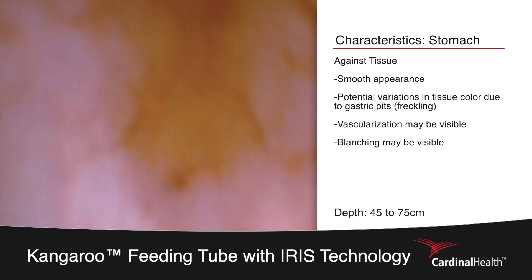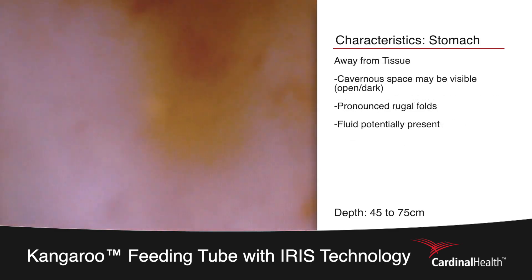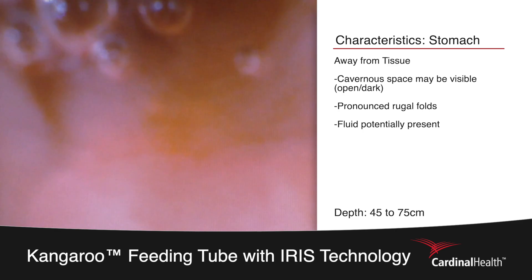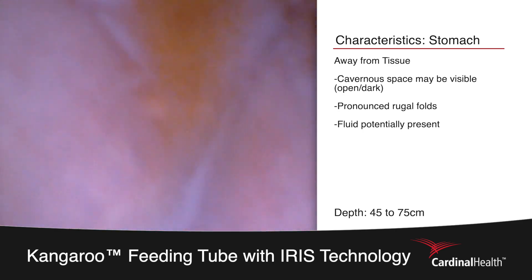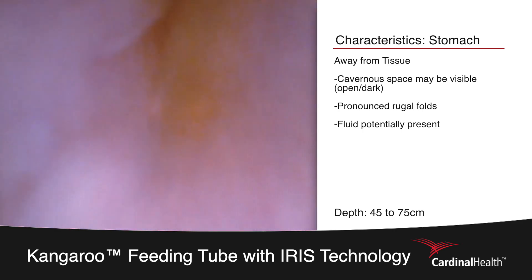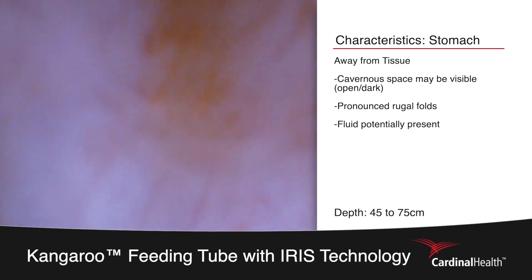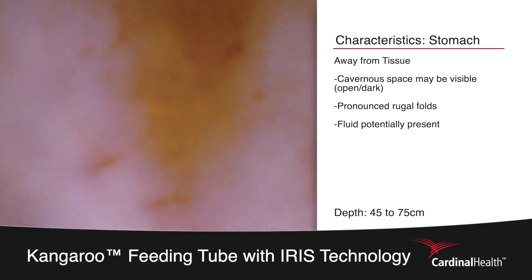In order to visualize the rugal folds of the stomach, the placer retracts the feeding tube into the esophagus. As you can see, the tissue of the esophagus now collapses around the end of the feeding tube, and then progresses back into the stomach as can be seen by the presence of gastric pits.